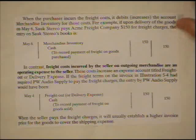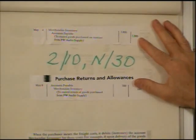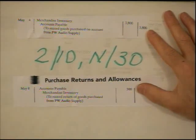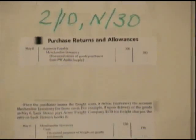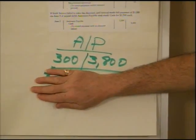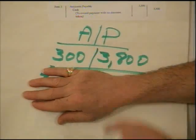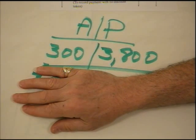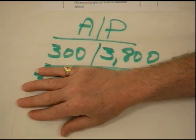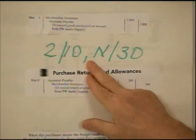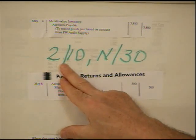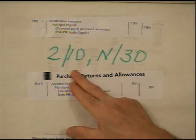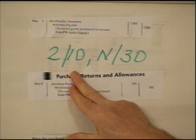Now it's time to make our payment on these purchases. We don't owe $3,800 — we owe $3,500 because of the return we made. Looking at the T-account for accounts payable, there's the initial recording of $3,800, minus the $300 return, leaving $3,500. Our terms were 2/10 net 30, meaning pay within 10 days of May 4th to get the 2% discount. We're going to take the 2% discount, but not on the full $3,800 — only on the $3,500 we actually owe.